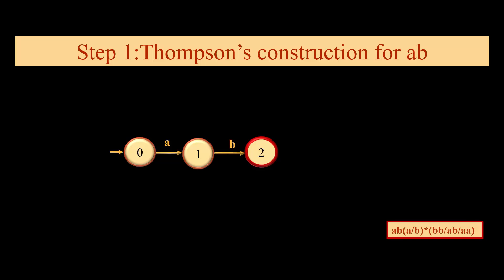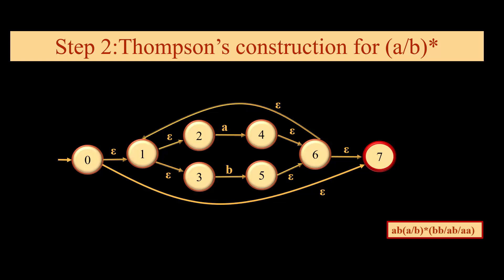When we talk about Thompson's construction for ab, it is simple concatenation a into b. As far as (a or b) star is concerned, we will have eight epsilons: four for or and four for star.